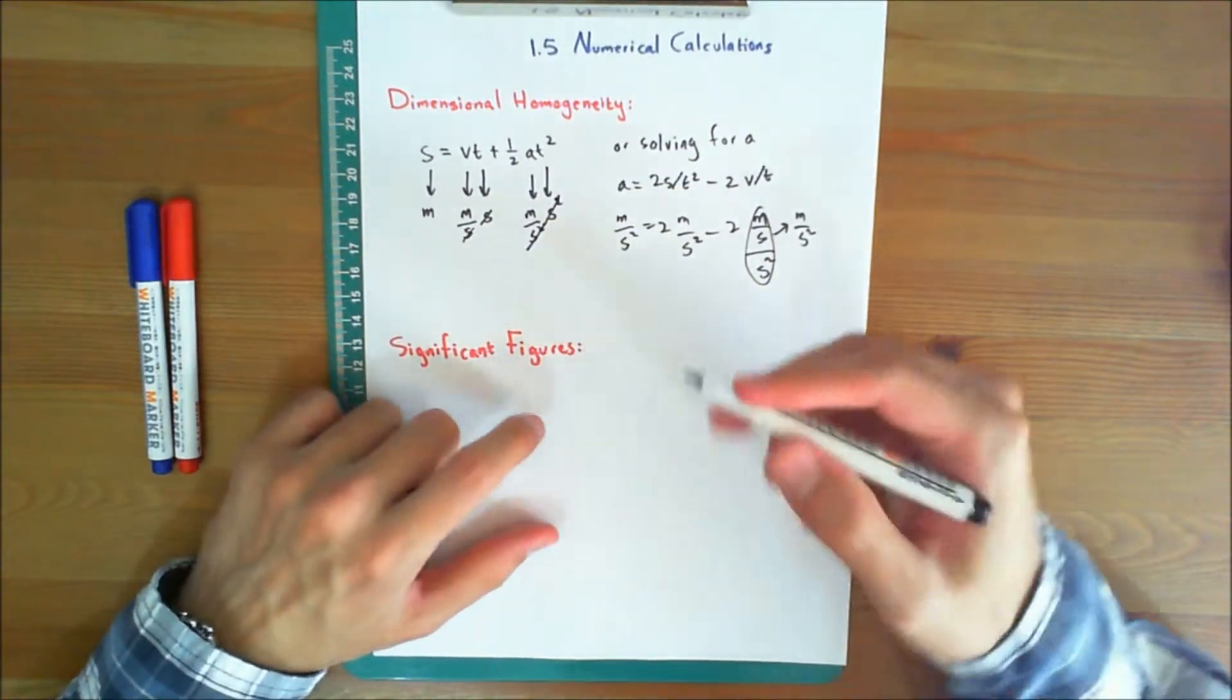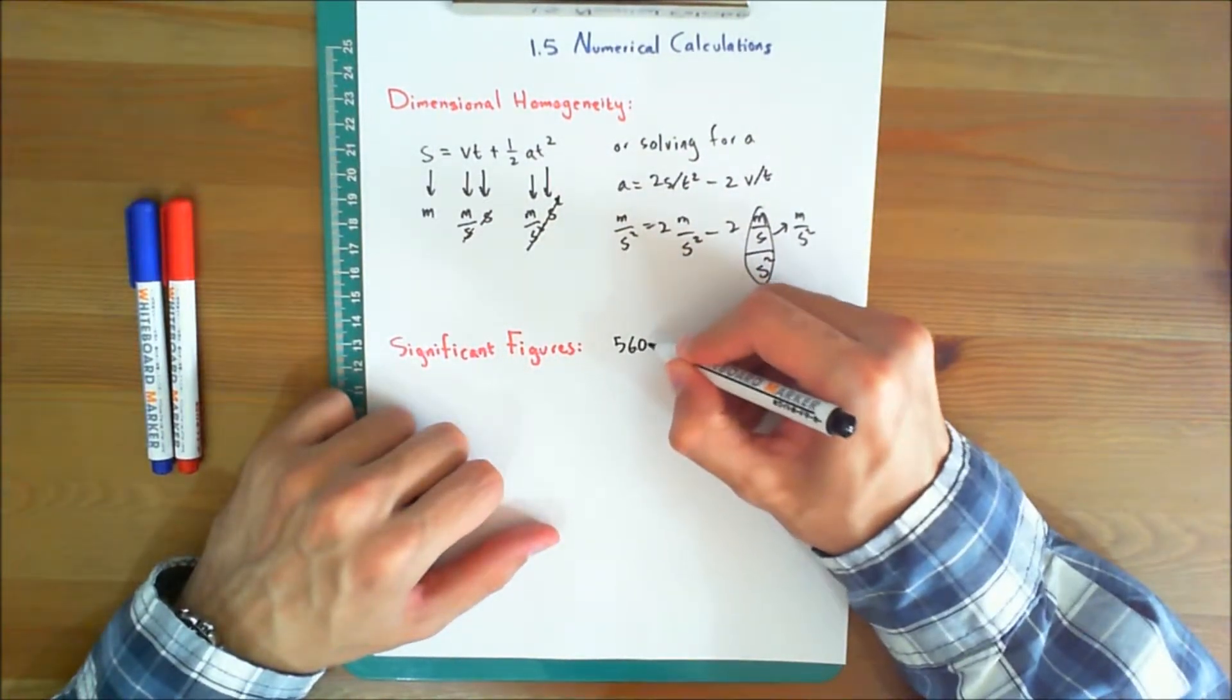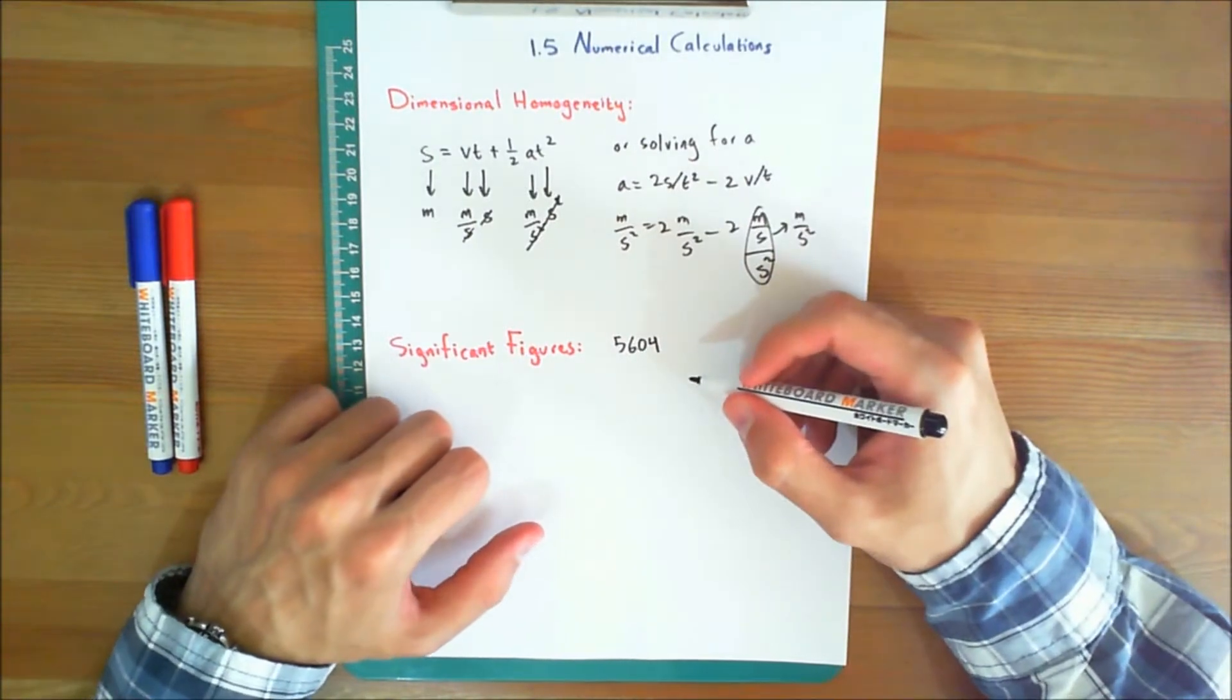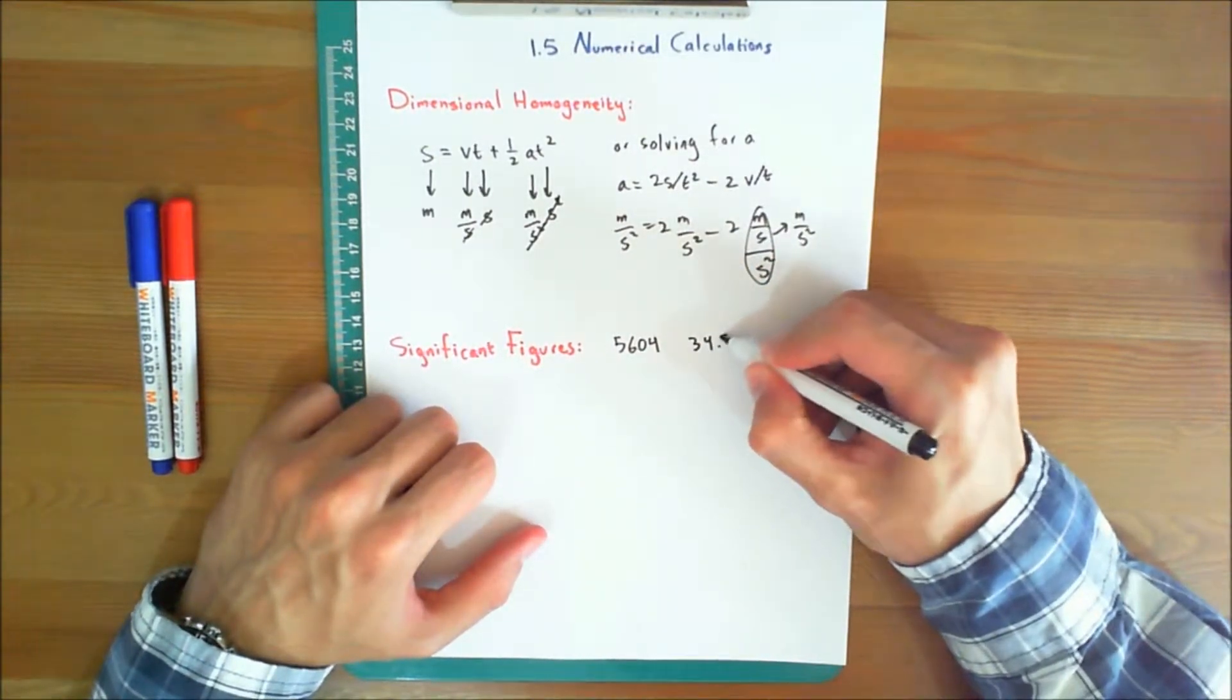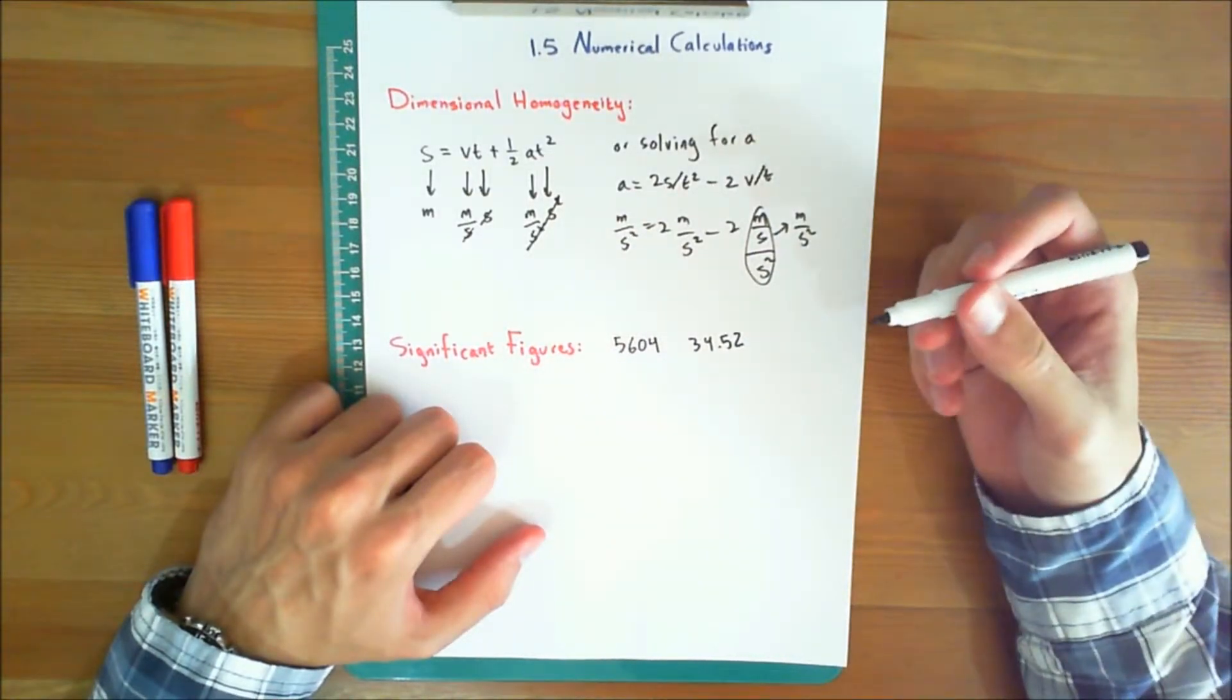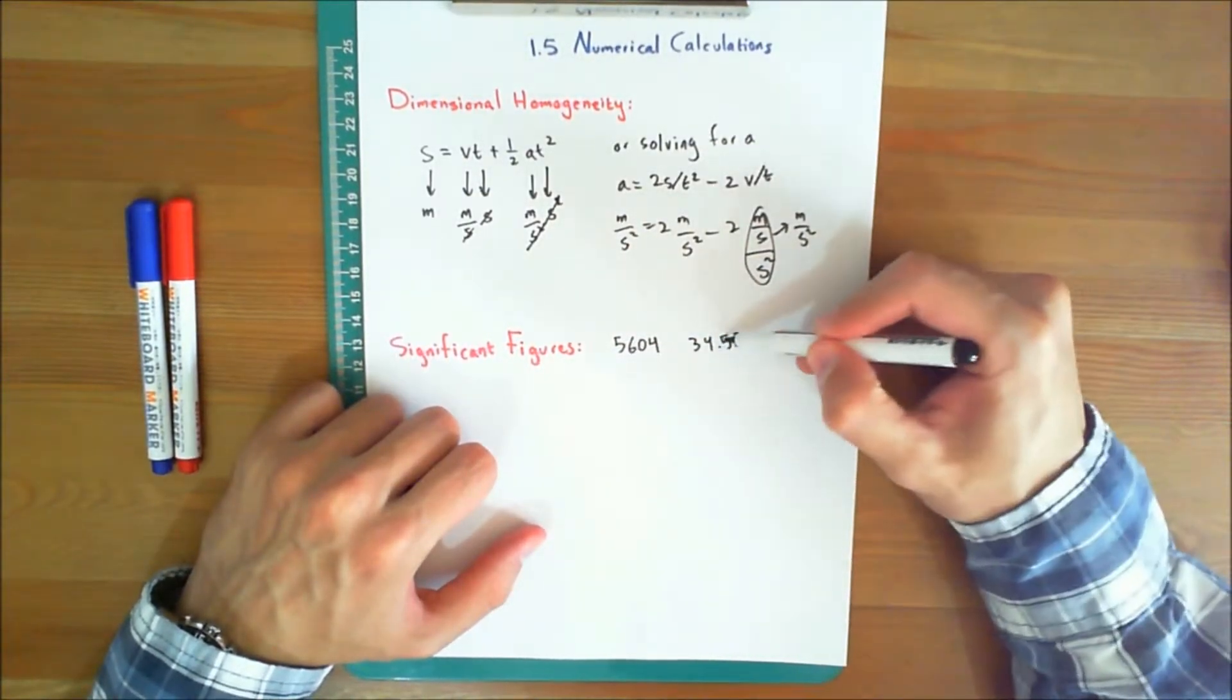For example, the numbers 5,604 and 34.52 each have four significant figures.